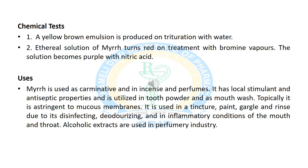Now we will discuss the various chemical tests for Myrrh. In the first test, we triturate Myrrh with water and it produces a yellow-brown emulsion. In the next test, an ethereal solution of Myrrh treated with bromine vapor turns red, and treatment with nitric acid shows purple color. Therapeutically, Myrrh is used as a carminative and in the manufacturing of perfumes. It has local stimulant and antiseptic properties and is used as an astringent, in preparations of tinctures, paints, gargles, and as a disinfecting and deodorant reagent.